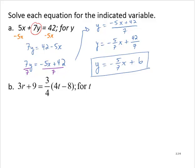3r plus 9 is equal to 3 fourths of 4t minus 8. Let's simplify the right hand side by applying the distributive property. So we have 3r plus 9 is equal to 3 fourths of 4t minus 3 fourths of 8.